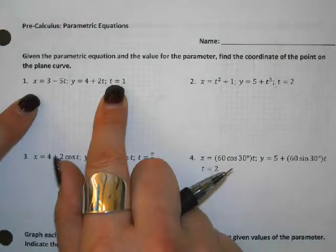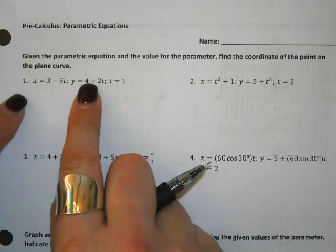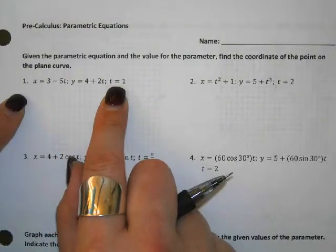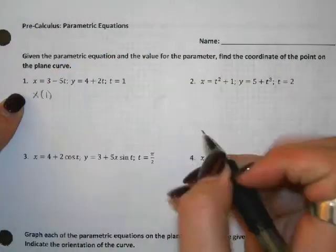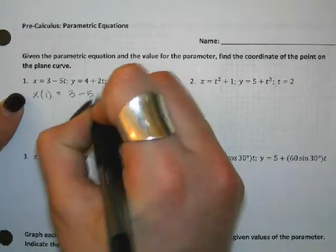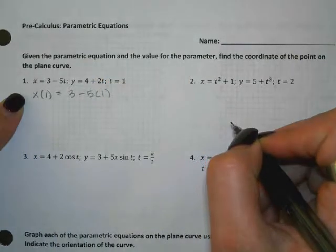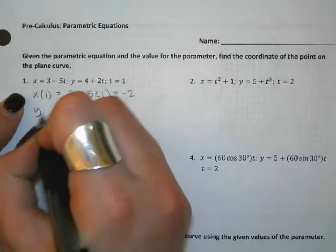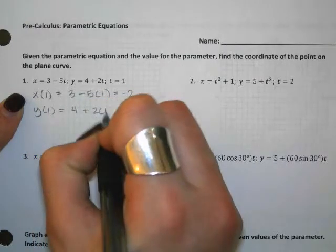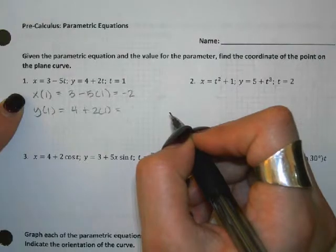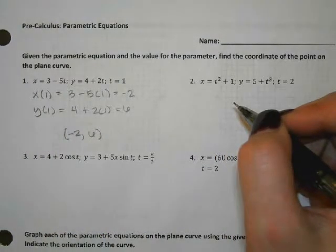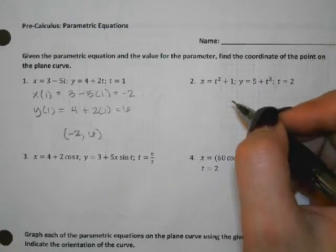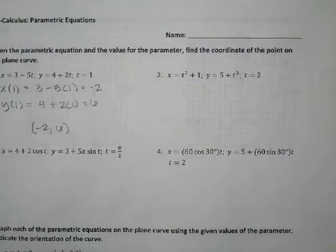For this beginning part, all they're going to ask you to do is take the t value and plug it in to find the x coordinate, then plug it in to find the y coordinate. So when t equals one: x of one is three minus five times one, which gives us negative two. And y of one is four plus two times one, which gives us six. So when the time is one, the location of the object is (−2, 6).